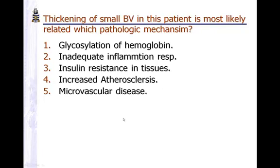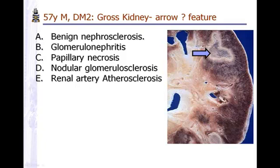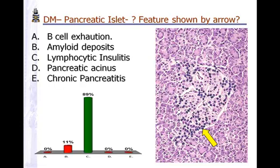That is hyaline arteriolosclerosis — age protein deposition within the small blood vessels. This is a classic appearance of papillary necrosis in a section of the kidney gross specimen in a diabetic patient. Remember, papillary necrosis can also occur in analgesic abuse and tuberculosis, but it is commonly seen in diabetes. Now the same picture as before, but the arrow is showing those inflammatory cells — lymphocytes infiltrating within the endocrine pancreas — that is lymphocytic insulitis.